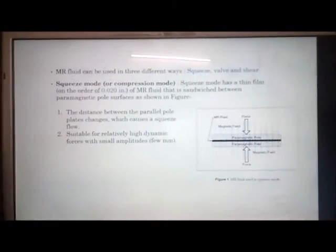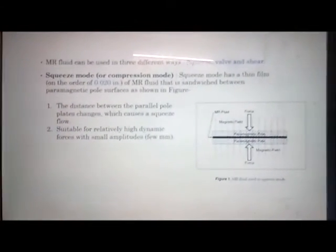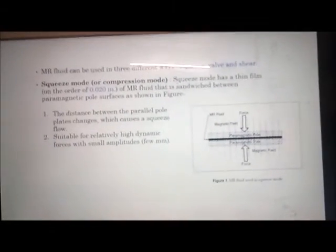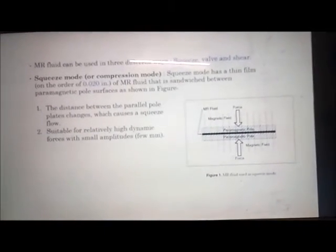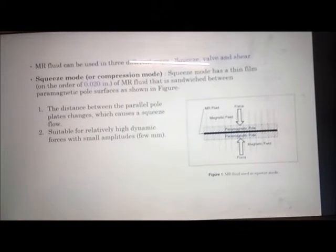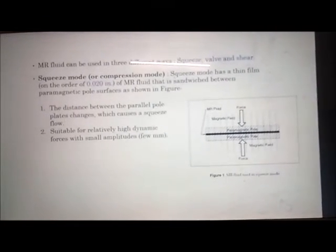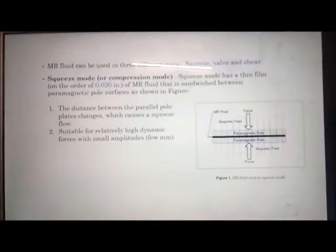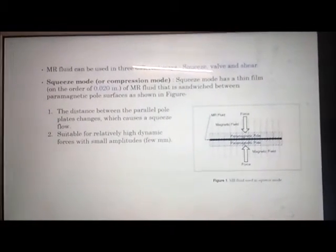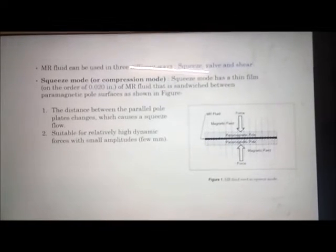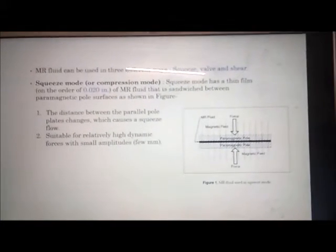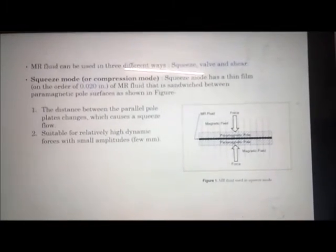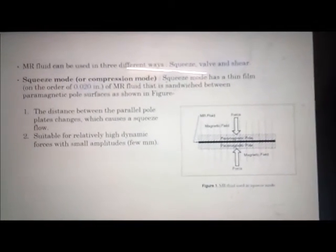MR fluid can be used in three different ways: squeeze, valve, and shear modes. In the squeeze mode, also called compression mode, it has a thin film of MR fluid of order 0.02 inches sandwiched between paramagnetic pole surfaces. The distance between the parallel poles and the plate changes, causing a squeeze flow. This mode is suitable for relatively high dynamic forces with small amplitude.